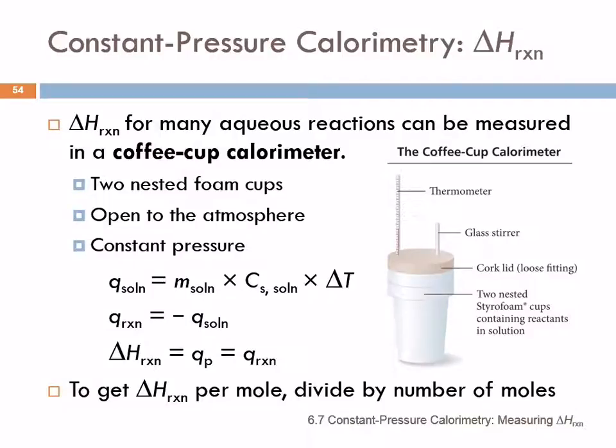We talked about constant volume calorimetry. We also have constant pressure calorimetry, and this is what we did in lab. The heat of reaction for many aqueous reactions can be measured in a coffee cup calorimeter. We've got two nested foam cups. We use two because it insulates better than one. It's going to be open to the atmosphere, so the pressure is constant.